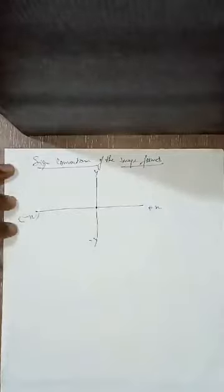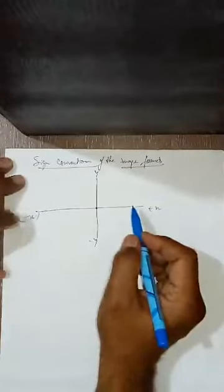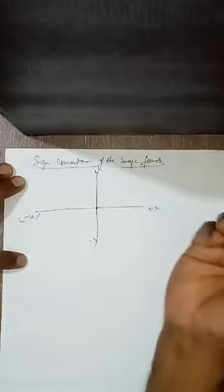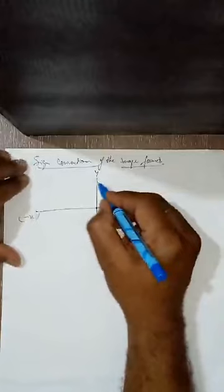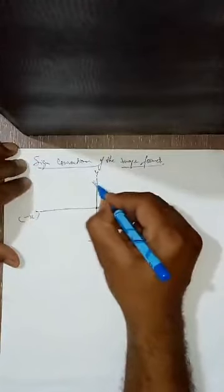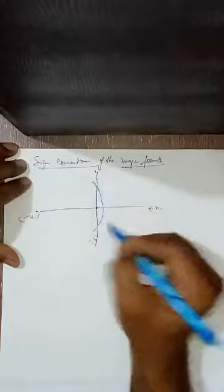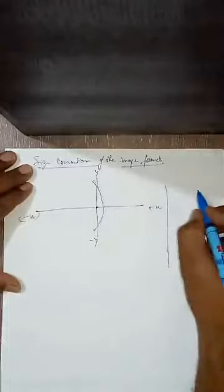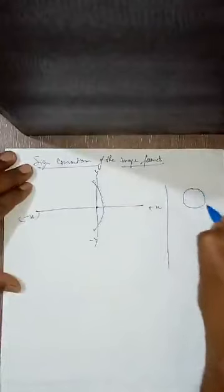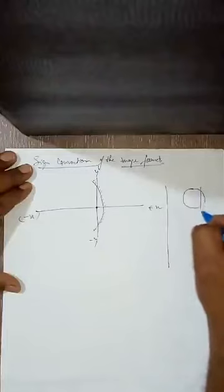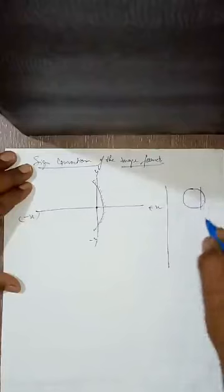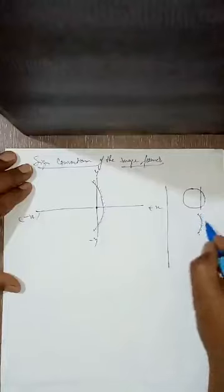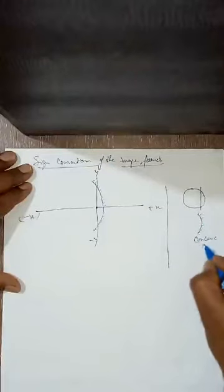Now, if any object — the object can be put here or here. Let me consider a concave mirror. Many of you will ask: what is a concave mirror? So, a brief about the concave mirror. A hollow spherical glass is there. A part of it is cut down from this portion, and then it is painted in silver from the back side. So it becomes a concave mirror.